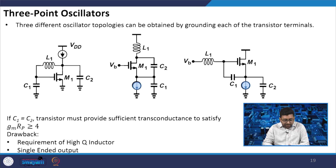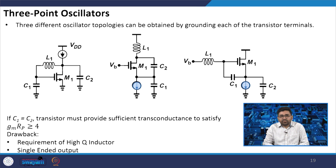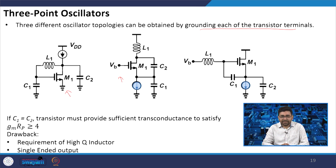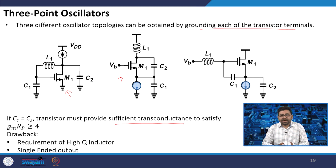There are 3-point oscillators that are also used, by tapping out the inductance at one point which has C1 and C2, and we can obtain configurations by grounding each transistor terminal. This gives a common source configuration and a common gate configuration. Either can be used to generate oscillation. If C1 equals C2, the transistor must provide sufficient transconductance so that gmRp is greater than or equal to 4.